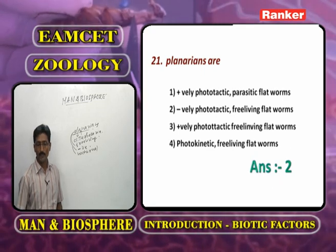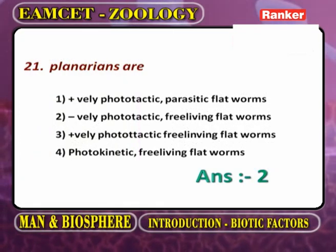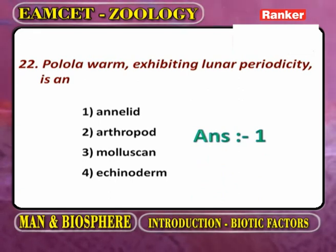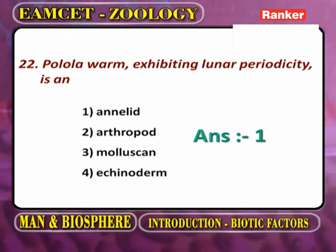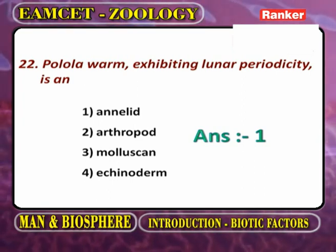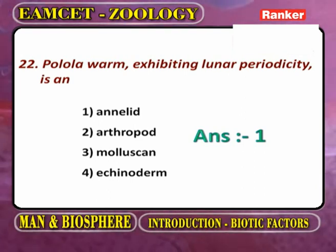Based on this, planarians are negatively phototactic and free-living flatworms. Regarding the palolo worm, or Pacific palolo worm, which exhibits lunar periodicity, its scientific name is Eunice viridis. It is an annelid belonging to class Polychaeta.